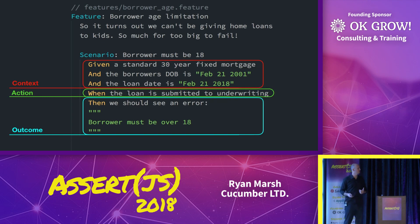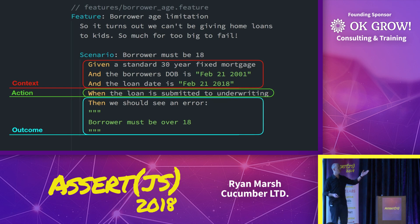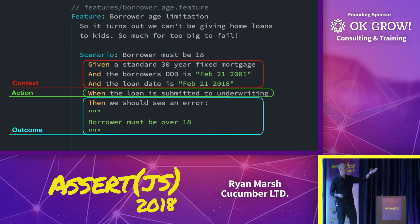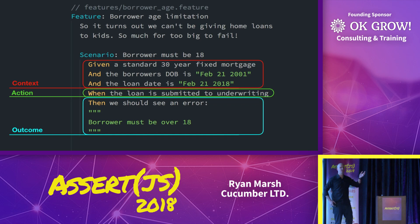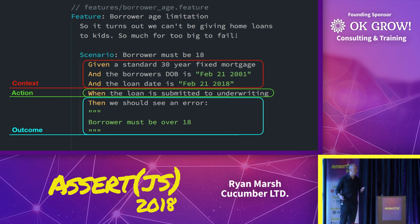Let's take this back to our Cucumber feature file. The context — that's the original state: a standard 30-year fixed mortgage, the borrower's date of birth, and a loan date. These are specific, hard-coded, concrete examples. We have an action that introduces a stimuli or mutation to the system — submitting it to underwriting. And we observe an outcome. This is how we think about it: context, action, outcome.